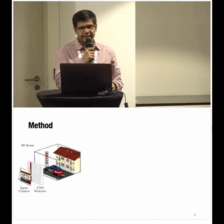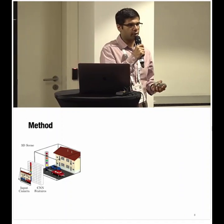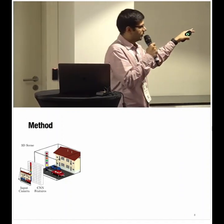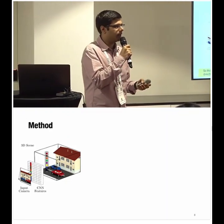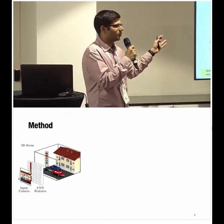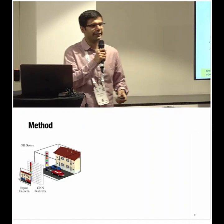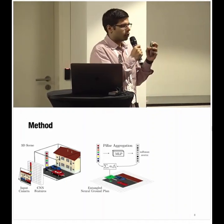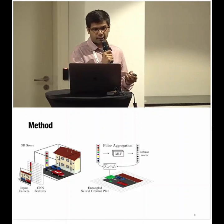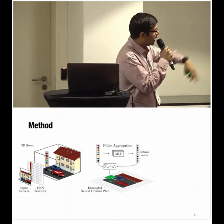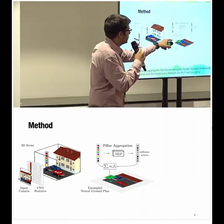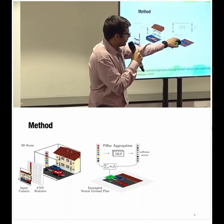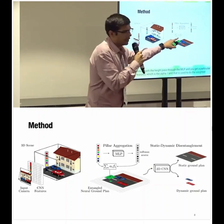This unprojection step produces a 3D volume of depth-encoded features. Operating directly on this volume would be expensive — a 3D CNN is costly, and 3D attention is infeasible. Instead, we add a pillar aggregation module that implicitly aggregates features along the height. Each feature is concatenated with the height, passed through an MLP to produce a score alpha_i, which is used in a weighted sum to give a single latent on the ground plan.